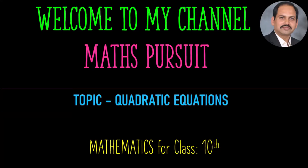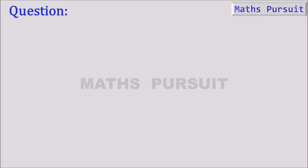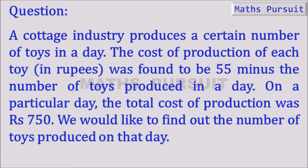Welcome to my channel Maths for Street. Today under the topic quadratic equations, let's see what exactly we have in the question. A cottage industry produces a certain number of toys in a day. The cost of production of each toy in rupees was found to be 55 minus the number of toys produced in a day. On a particular day the total cost of production was rupees 750. We would like to find out the number of toys produced on that day.